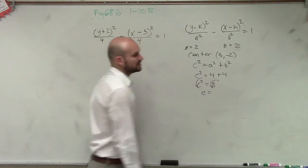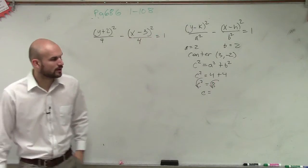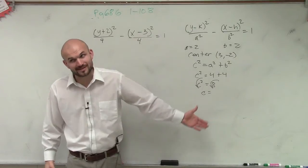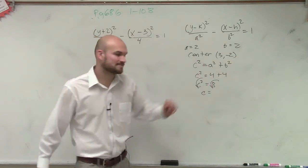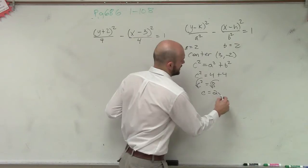Take the square root, c equals 2.8284271. But we don't want a decimal approximation, right? We want to simplify it, which would be 2 radical 2.